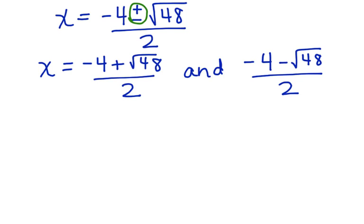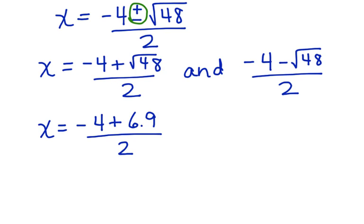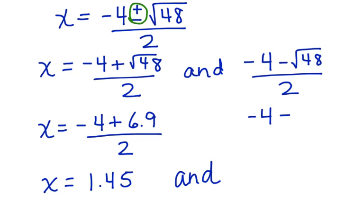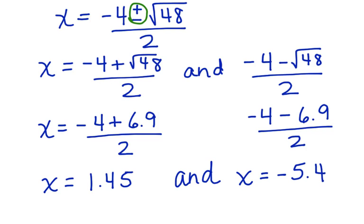Let's work with the left side first. x is equal to negative 4 plus the square root of 48, which is 6.9, all divided by 2. So x is equal to 1.45. And on the right side, we have negative 4 minus 6.9 divided by 2, so x is equal to negative 5.45.